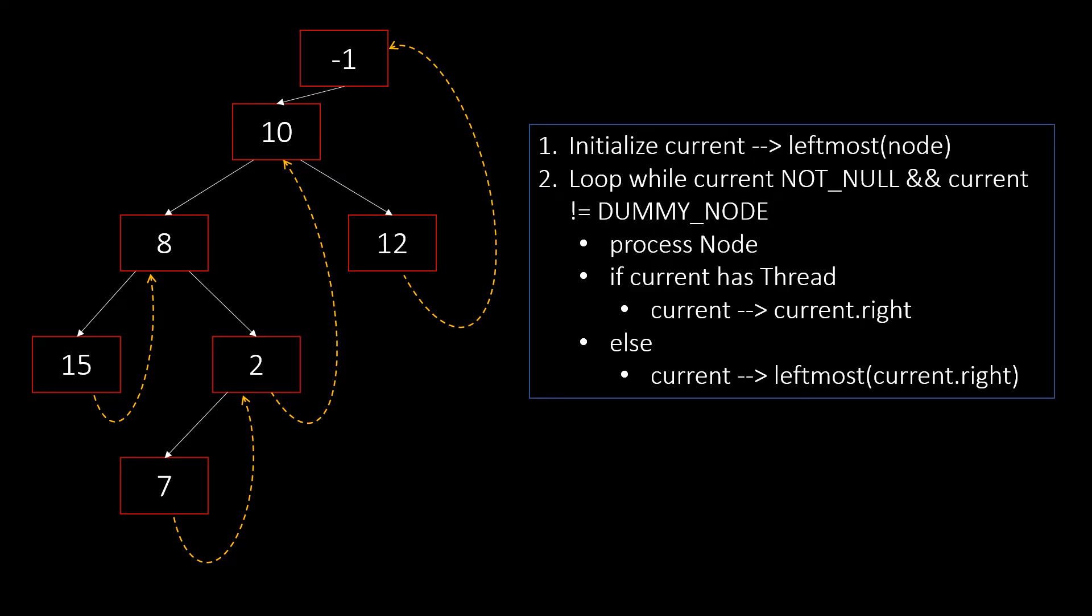Once the loop is terminated, we will have our inorder traversal. Here we can see that we did not use stack or recursion stack or queue. That is why this kind of traversal is also known as stackless or queueless traversal. The threaded traversal is also famous with the name of Morris traversal.